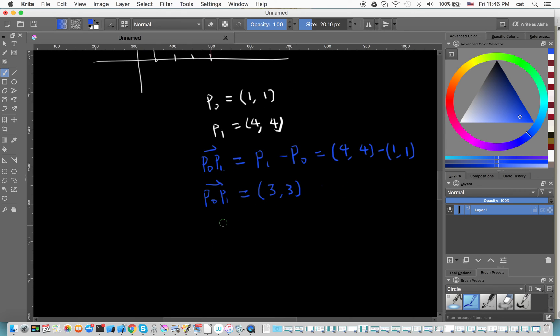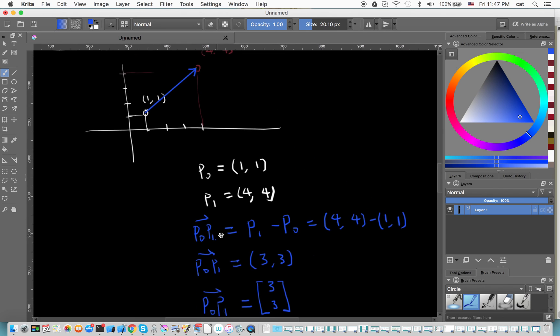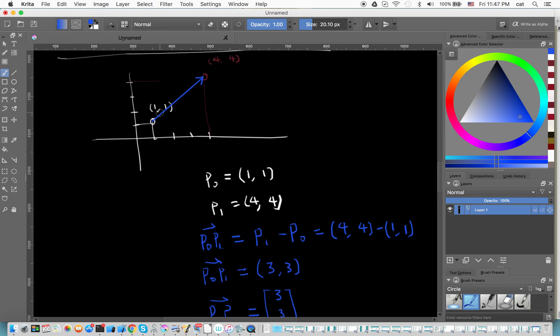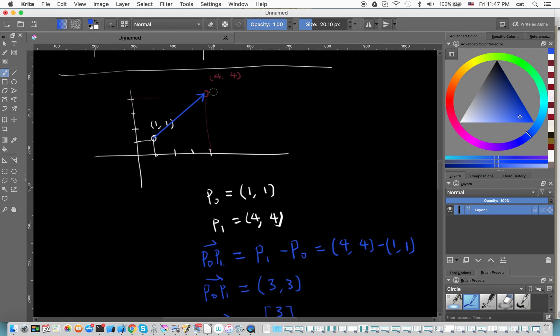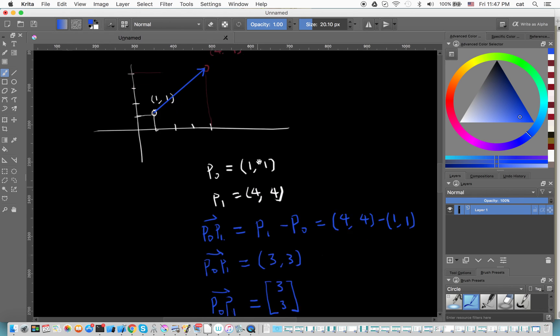Normally when we write a vector, we use a column vector, it means that we write something like this: [3, 3]. So we have a vector from (1,1) to (4,4). (1,1) is the tail and (4,4) is the head. P₀ is the tail, so P₁ is the head.